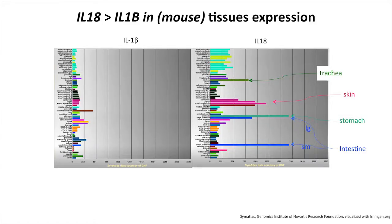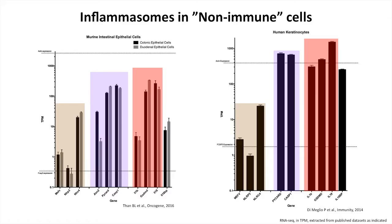But if you look in the tissues, it's a totally different story. If you take mouse tissue and grind it up and look at transcript levels for IL-1-beta versus IL-18, now IL-1-beta is the loser. There's tons of IL-18 in the tissues — in the trachea, skin, stomach, large and small intestine. In epithelial mucosal barrier surfaces, there's a ton of IL-18 message. From GEO RNA-seq data, in intestinal epithelial cells, the amount of NLRC4 is much higher than MEFV and NLRP3, with plenty of IL-18 especially over IL-1-beta. We see the same in human keratinocytes.